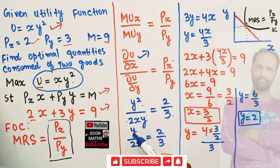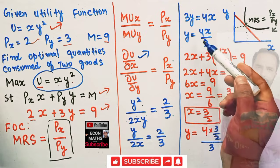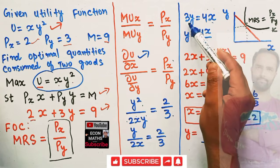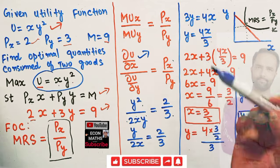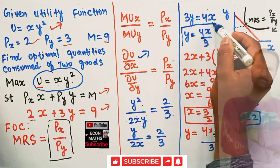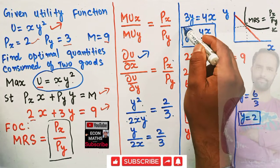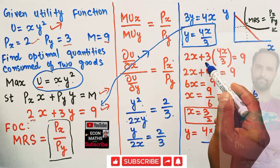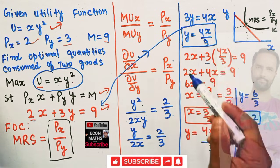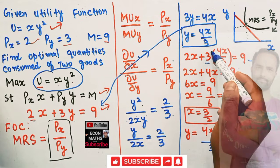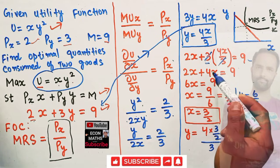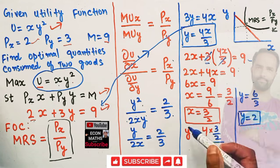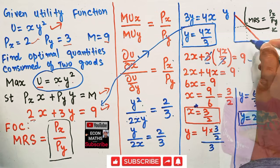Cancelling one y, we get y/2x = 2/3. Solving for y: multiplying across gives 3y = 4x, so y = 4x/3. Now we plug this value of y into the budget constraint: 2x + 3·(4x/3) = 9. The 3s cancel, leaving 2x + 4x = 9, so 6x = 9, which gives x = 9/6 = 3/2. The optimal quantity of good x is 3/2.